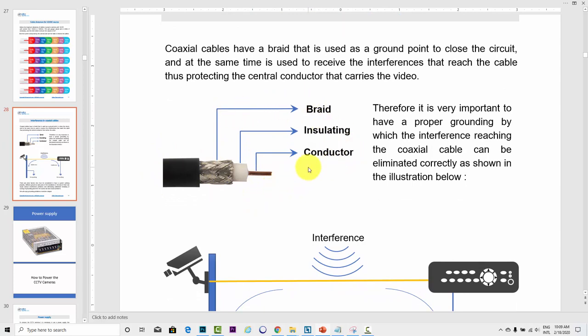They work together. The conductor is going to carry the signal from the camera, the video signal, and the braid is going to be the reference. It's the reference for the signal, so it's a common ground.